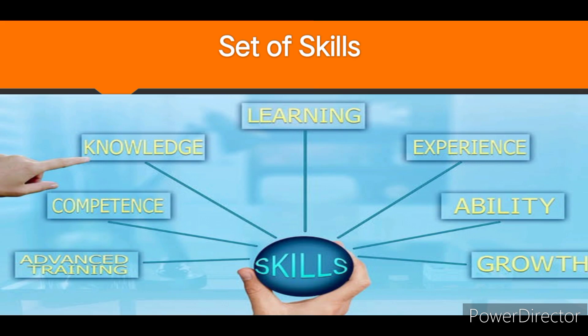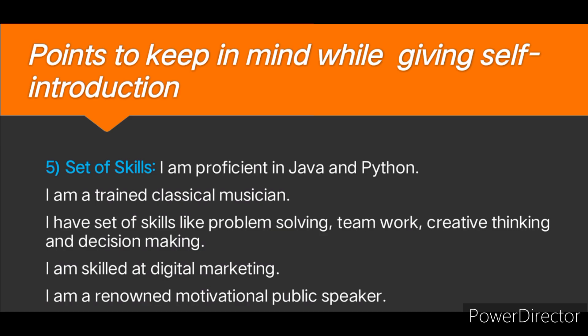Point number five will be set of skills. Here we want to do our own analysis and find out our own abilities — the set of skills that we have. For example: I am proficient in Java and Python. I am a trained classical musician. I have a set of skills like problem solving, teamwork, creative thinking, and decision making. I am skilled at digital marketing. I am a renowned motivational public speaker. In short, here we have done our own SWOT analysis.